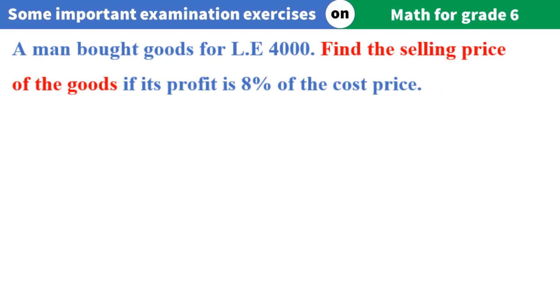A man bought goods for LE4,000. Find the selling price of the goods if its profit is 8% of the cost price.